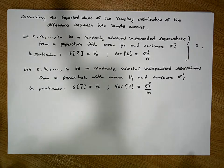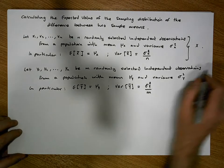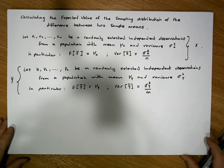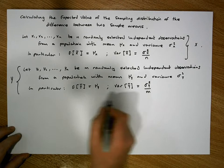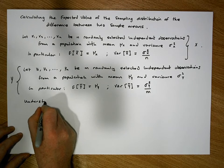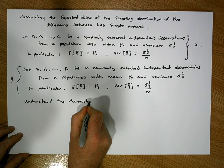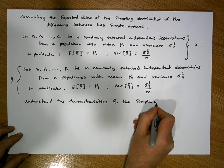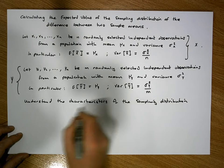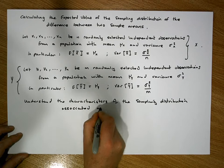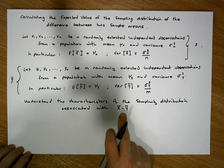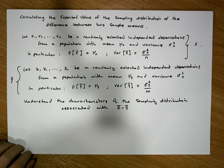Now, what we'd like to calculate is, when we have these two independent random variables x and y, we'd like to understand the characteristics of the sampling distribution associated with x bar minus y bar. So we'd like to know what the expectation and the variance of this particular distribution are going to look like.